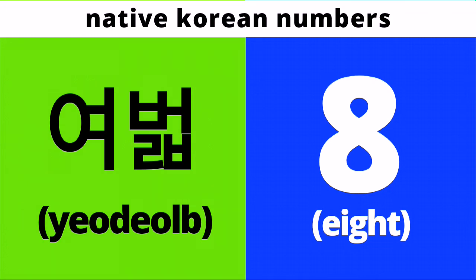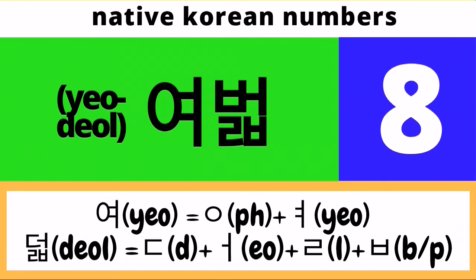Next, the native Korean version of number eight is Yo dol. The first syllable is Yo, the second syllable is Dol. Pronounce it with me: Yo dol. To spell Yo dol in Hangul, for the syllable Yo we need to draw a placeholder Ieung followed by a Yo character. The second syllable Dol will be written by drawing a Digeut character followed by an O character followed by a Rieul character and a Bieup character.